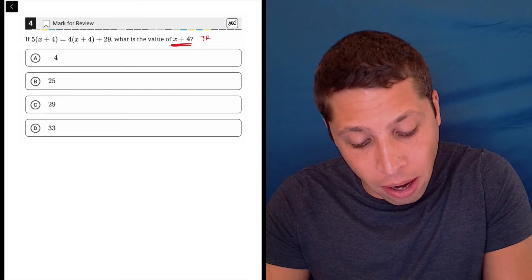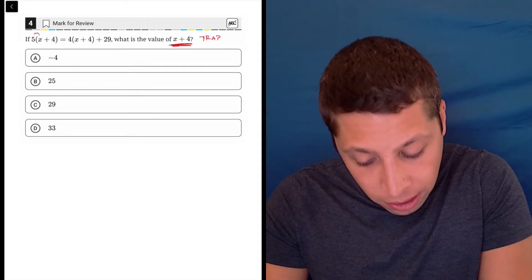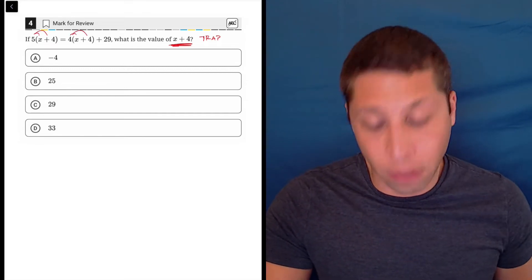That is the trap—that we solve for x instead of x plus 4. But for most of us, we are just going to still distribute both of these things and solve it traditionally.